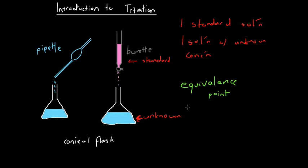Say we have a reaction where two sodium ions are reacting with one carbonate ion. If we have sodium ions in the conical flask and carbonate ions in the burette, and hypothetically there are 20 sodium ions in the flask, the equivalence point will be reached when 10 carbonate ions have been dropped — two sodium ions for every carbonate ion — and that will be the point at which the equivalence point is reached.